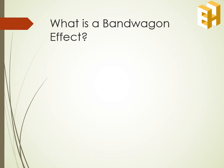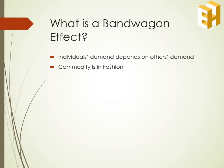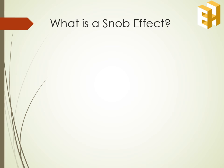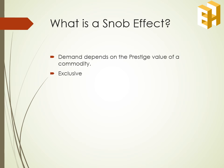Let's now look at the bandwagon effect. According to this, a commodity is demanded by a consumer simply because others are demanding it — you may say the commodity is demanded because it is in fashion. We have another effect known as the snob effect. According to the snob effect, a commodity is demanded only if it has a prestige value — it is demanded only if it's exclusive. As a result, the demand curve for it is steeper because only few people will be able to purchase those goods.